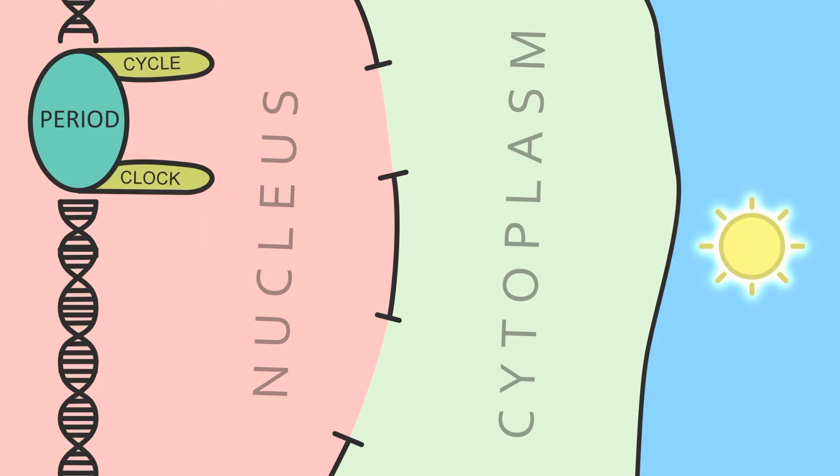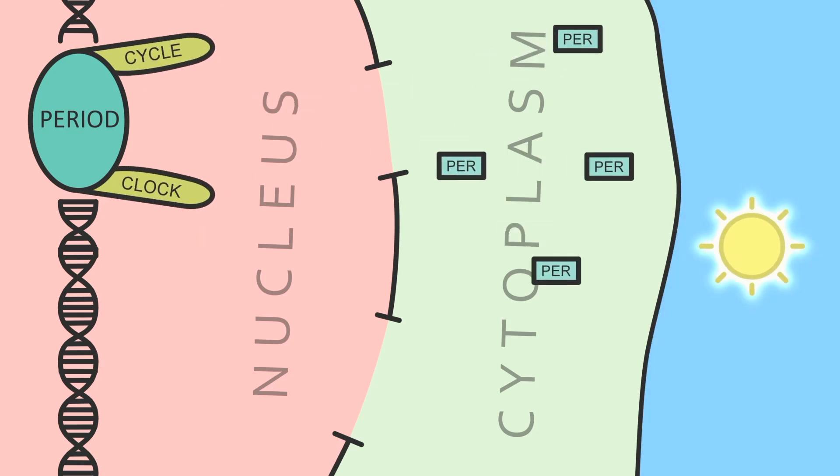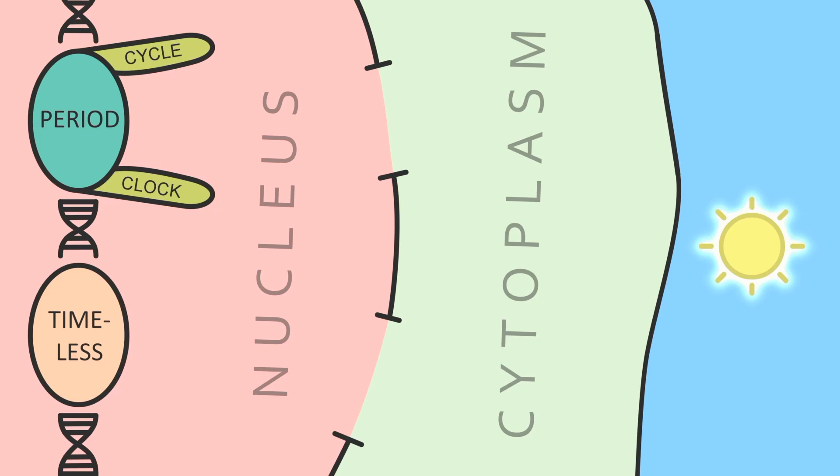Again, PER breaks up in the morning, restarting the cycle. We'll rewind again and add another gene, TIMELESS. Like PERIOD, TIMELESS has cycle and clock attached to help it make a protein, TIM.